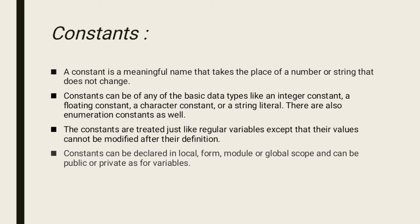The main difference between a constant and a variable is that once you have declared a constant, you cannot change its value during program execution. A constant is a meaningful name that takes the place of a number or string that does not change. Constants can be of any of the basic data types like an integer constant, a floating constant, a character constant, or a string literal. There are also enumeration constants as well.